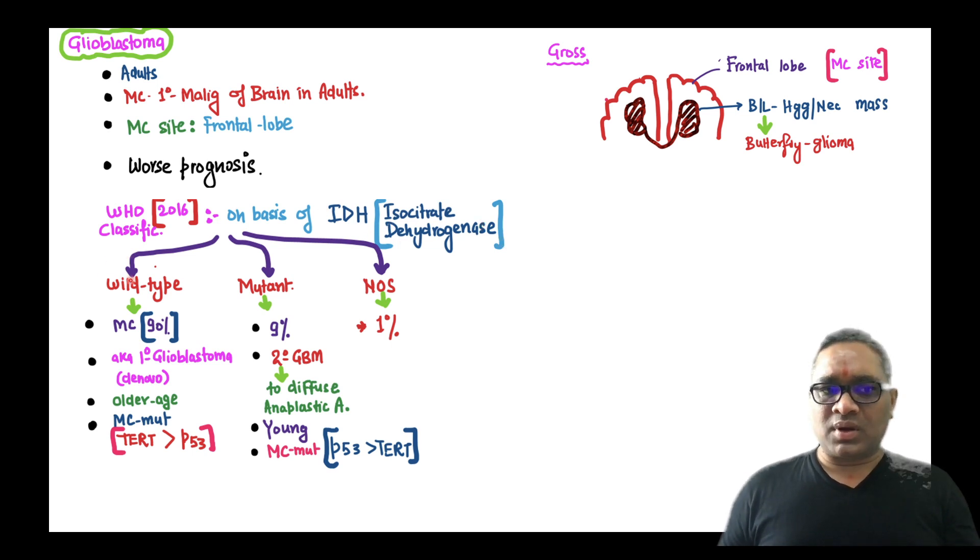There are three types of glioblastoma: wild type, mutant, and not otherwise specified. Most common is the wild type which is seen in 90% of the cases.